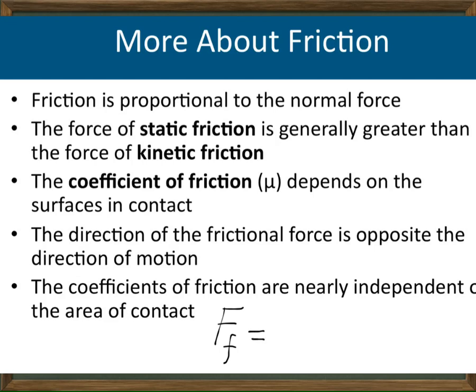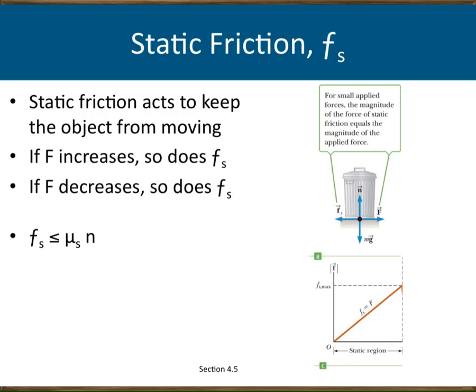If this is a frictional force, it is proportional to the normal force with a proportionality constant we call mu. This is the coefficient of friction. As I said, the magnitude of friction force is proportional to the normal force, and this proportionality constant is nothing but the coefficient of friction. We have two different types of coefficient of friction for surfaces. If the object is in motion, we have a different coefficient called mu k, the coefficient of kinetic friction.